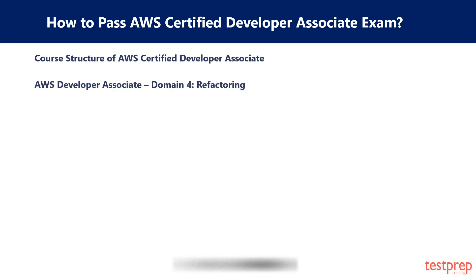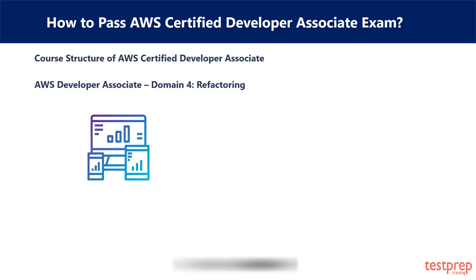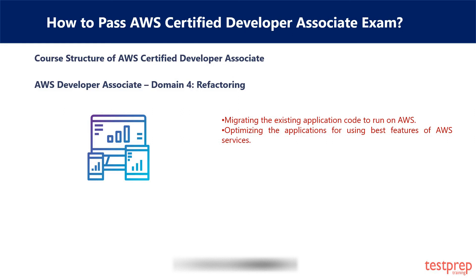Domain 4: Refactoring. This domain provides deep knowledge about AWS services and the features included in them. It covers 10% of the weightage in the exam. The sections covered are: first, migrating existing application code to run on AWS; and second, optimizing applications to use the best features of AWS services.